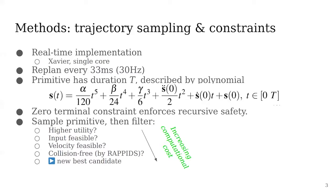We use a polynomial trajectory as a primitive which has duration T described by this equation. Alpha, beta, and gamma are the coefficients to be determined from the terminal condition, and s(0) are the current state estimates. We also impose a zero-terminal constraint on trajectories to enforce recursive safety.